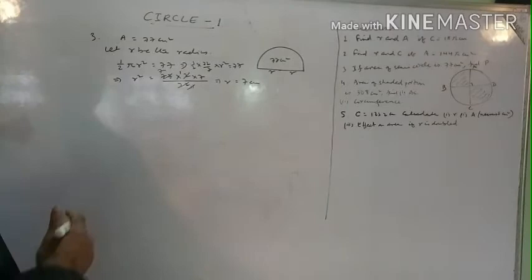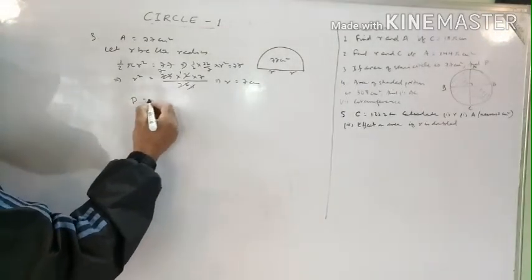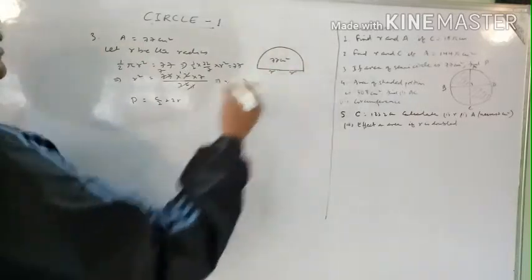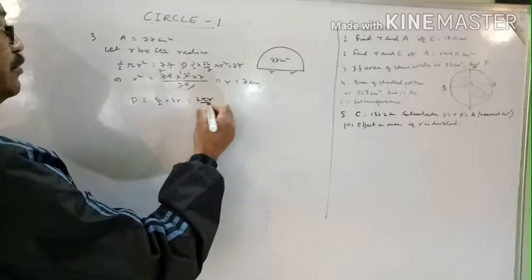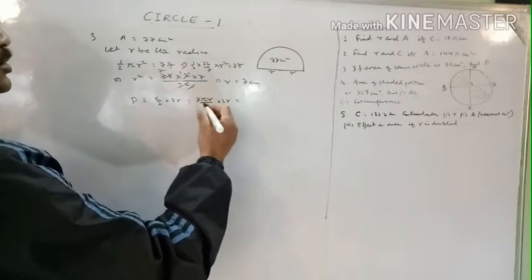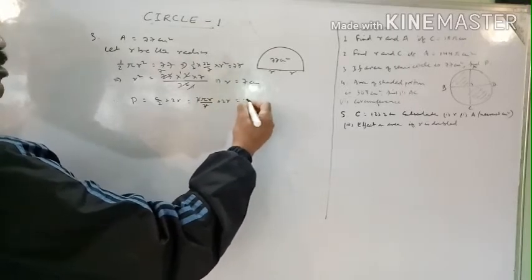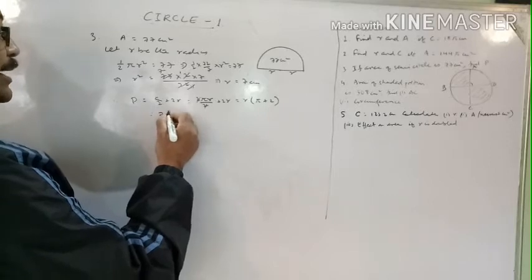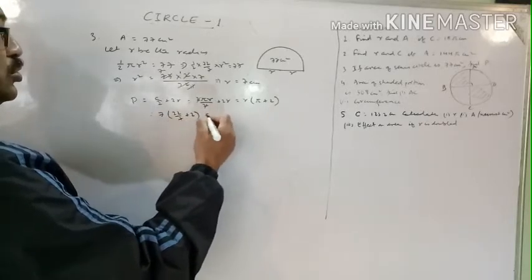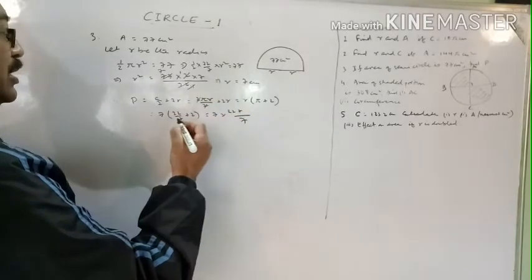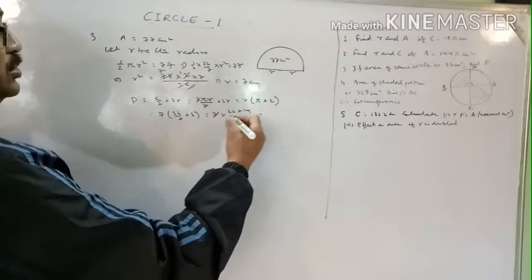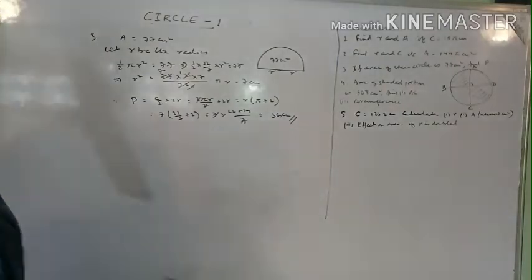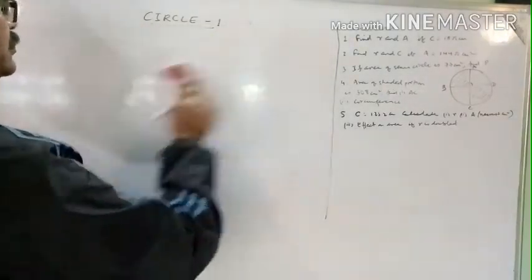Now find the perimeter. Perimeter of semicircle equals (C/2) + 2r equals πr + 2r equals r(π + 2). Substituting r equals 7 and π equals 22/7: 7 times (22/7 + 2) equals 7 times (22 + 14)/7 equals 22 + 14 equals 36 centimeters.